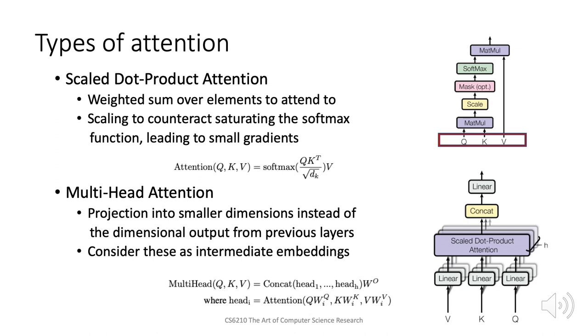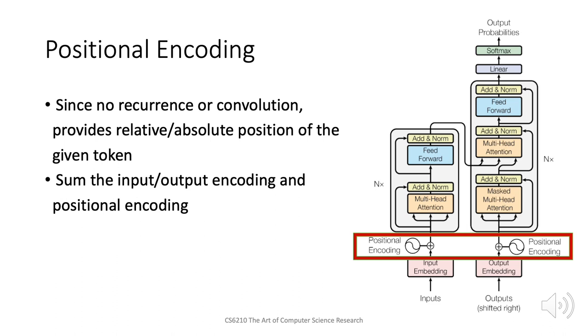Here, h is equal to 8 which means 8 heads are used. Also, since there is no recurrence or convolution in this model, positional encodings are used to maintain the order of the sequence. It forms a very important component of the transformer architecture.